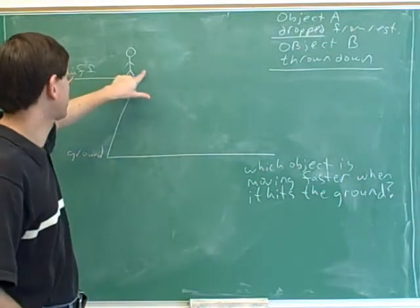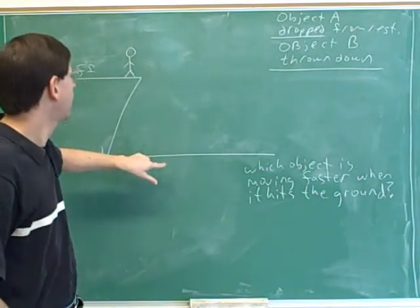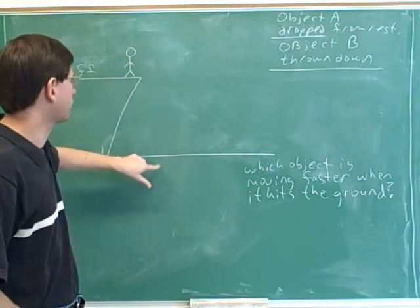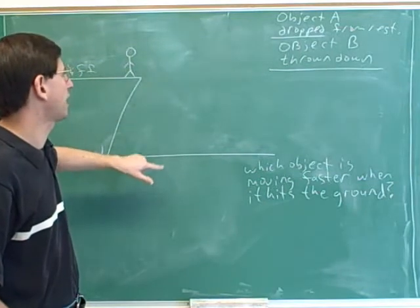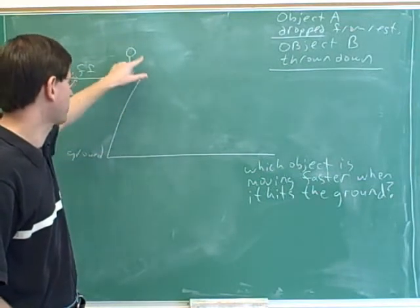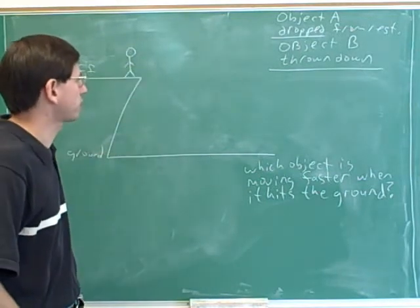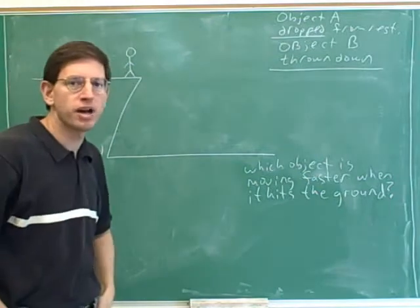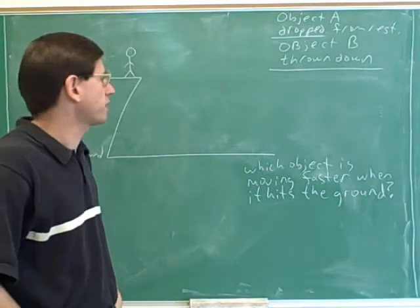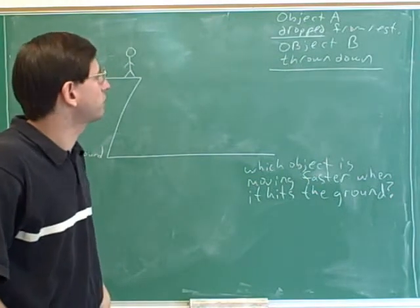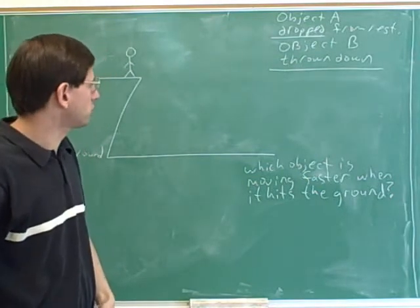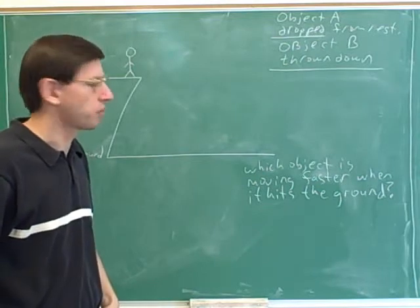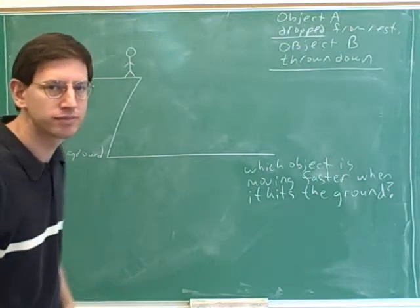Both of these objects are starting at the height of the cliff, but one is being dropped from rest and the other — object B — is being thrown down at the ground. Please pause the video and try to figure out conceptually, without using equations, which of these two objects would be moving faster when they hit the ground.